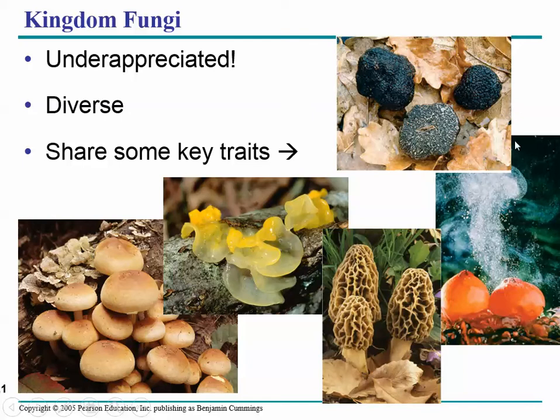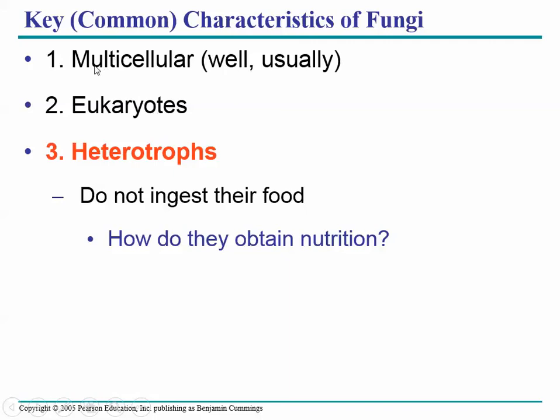We typically say fungi are multicellular since they're one of the three kingdoms of multicellular organisms, but as with almost everything in biology, there's an exception — the one-celled fungi, which are called yeast. They are eukaryotic and they're heterotrophs — other feeding. They cannot make their own food like plants; they have to get their carbon and organic molecules from another source.